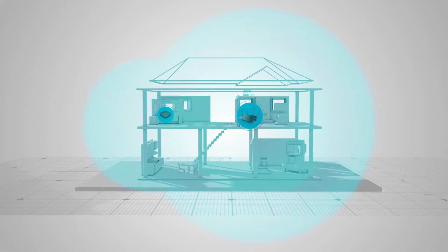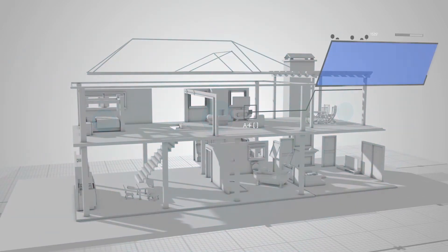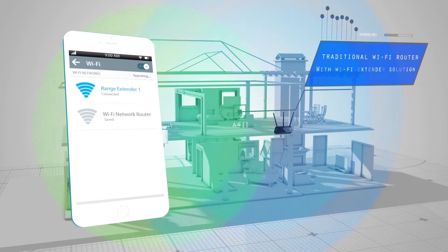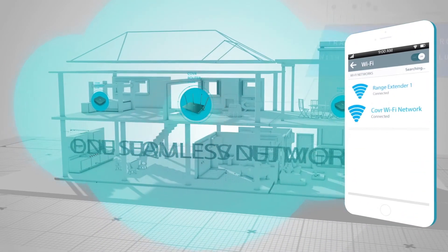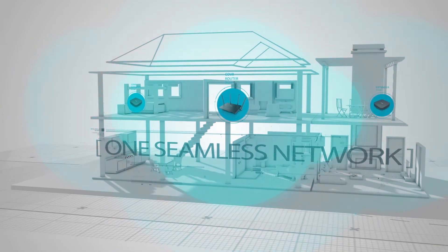Unlike traditional router plus range extender solutions where you need to switch from one network to the other to get the best connection, Cover works as one network and automatically connects you to the strongest signal as you move throughout your home.